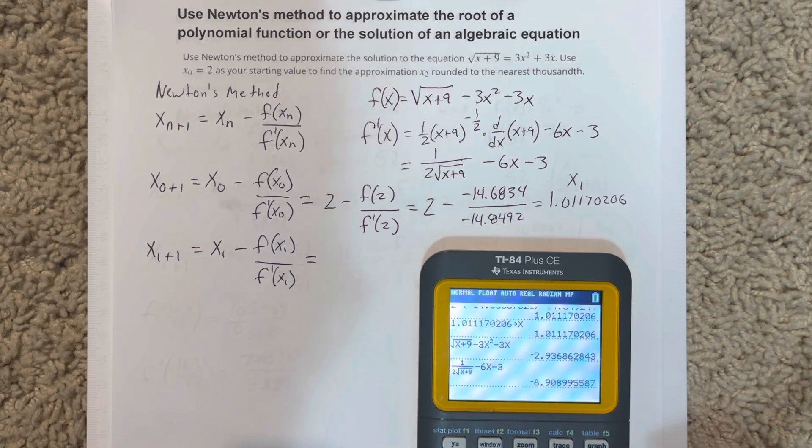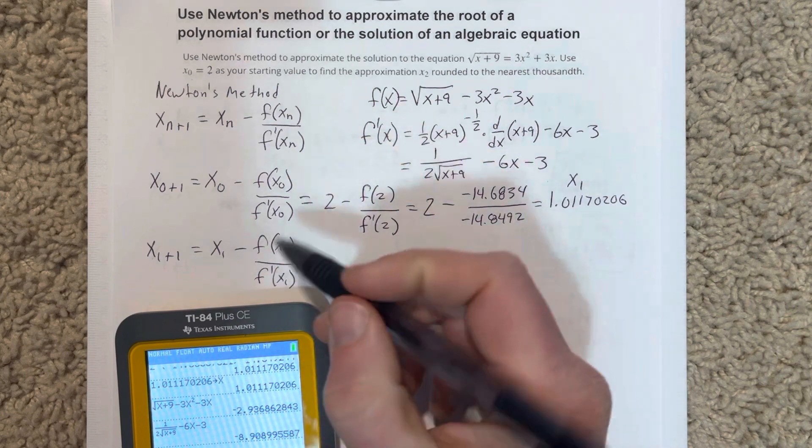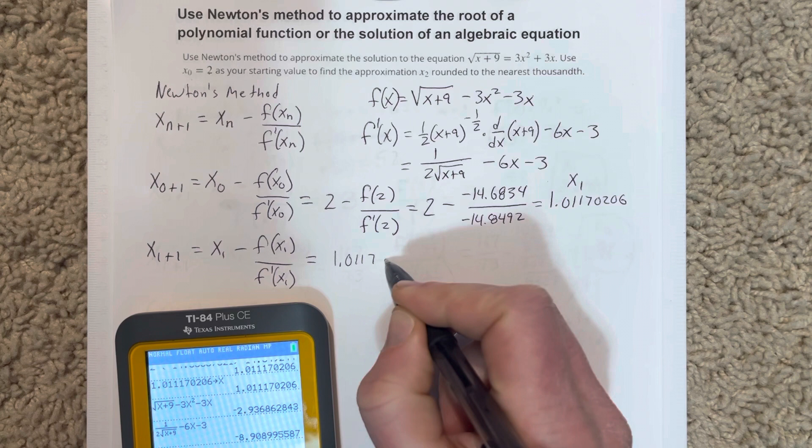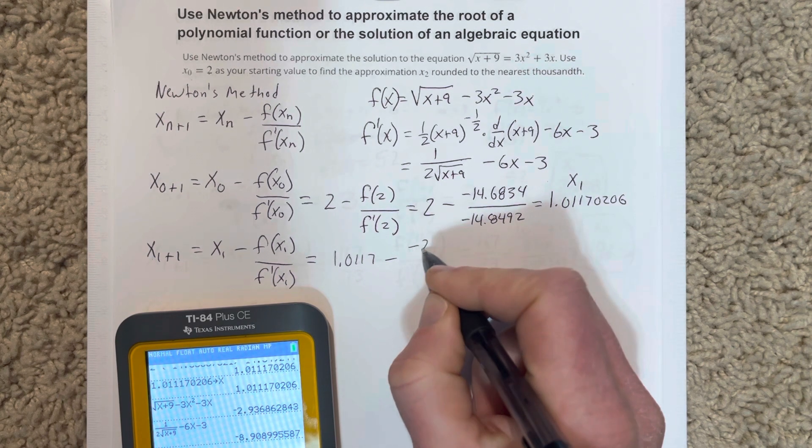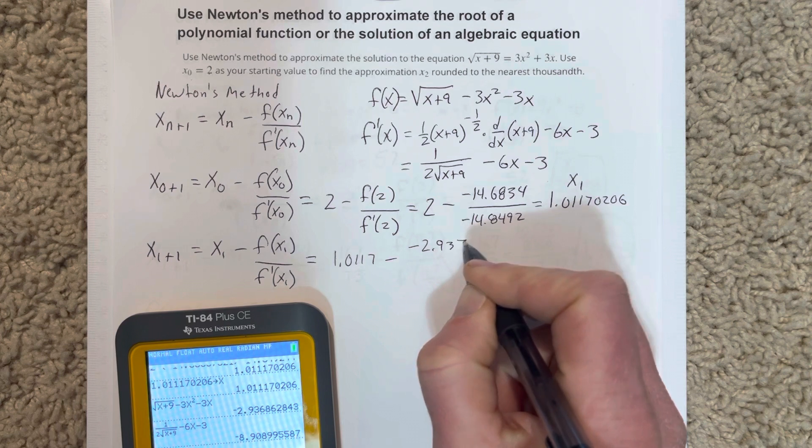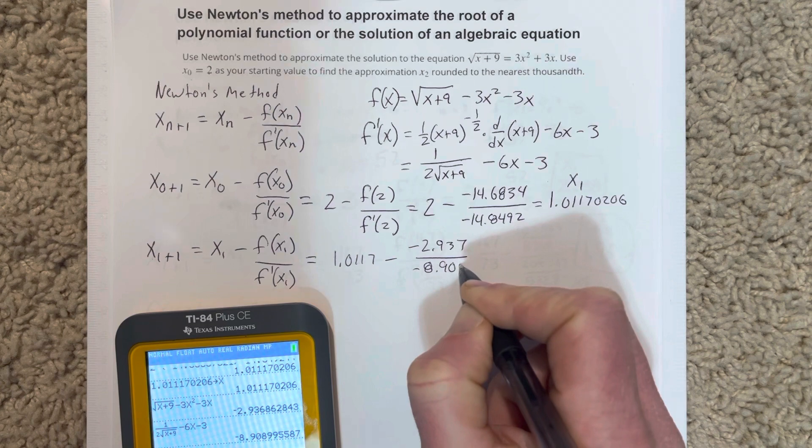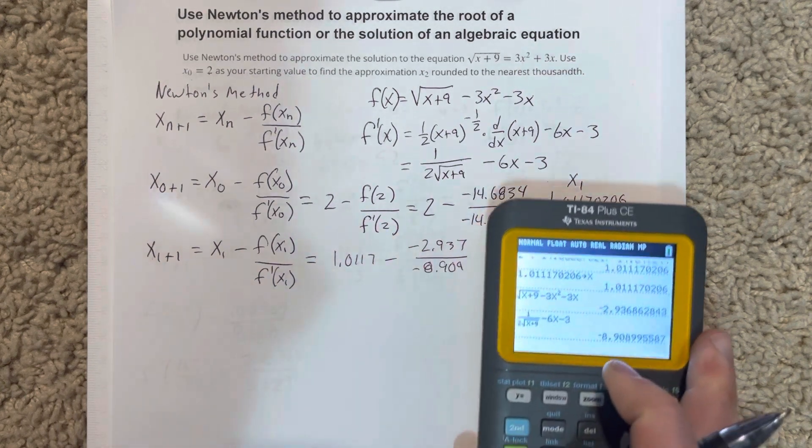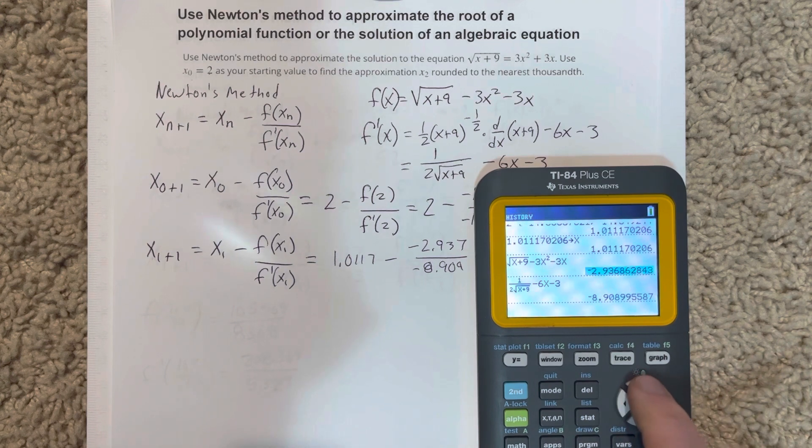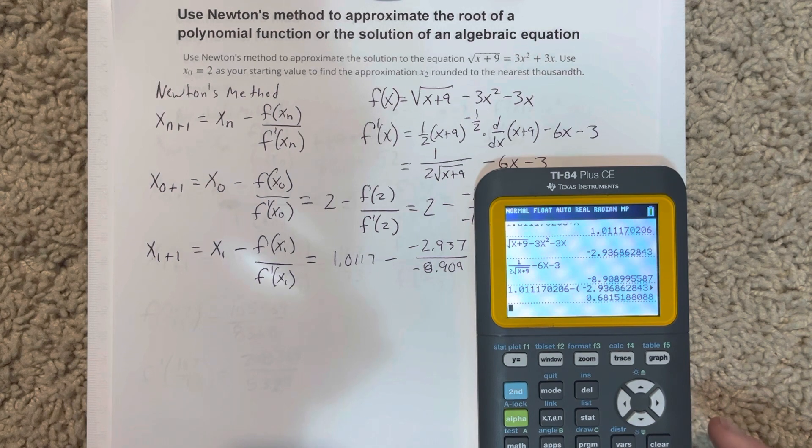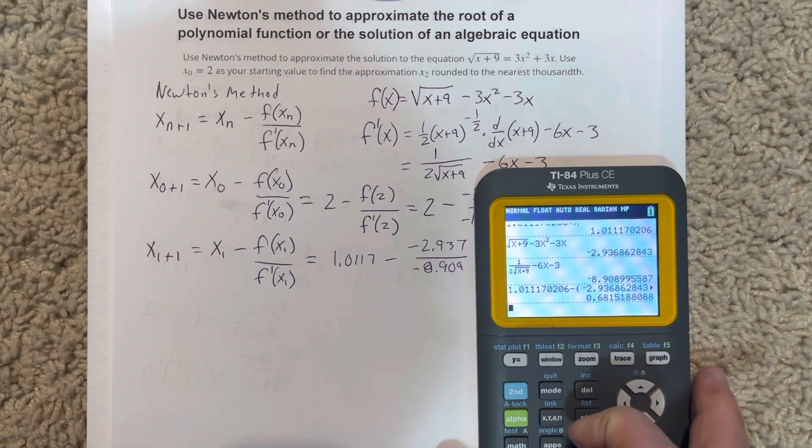We're going to have x1, which is this 1.0117 minus negative 2.937. I'm going to use all the original numbers when I do this. So this number minus this number divided by this number, 0.682.